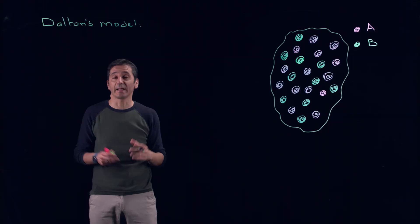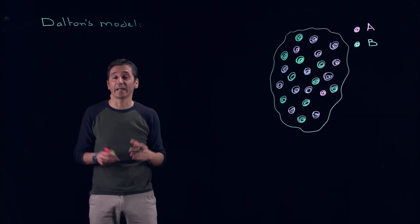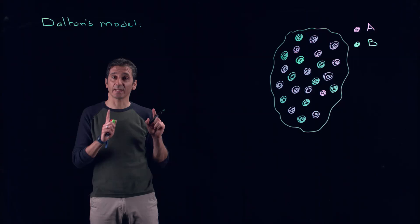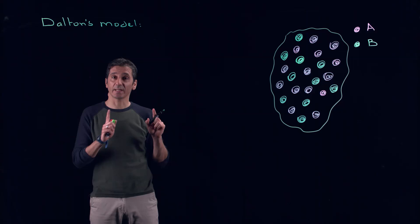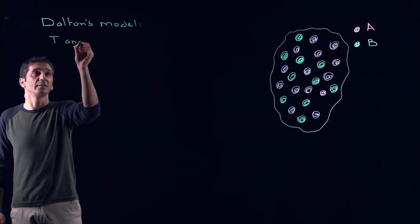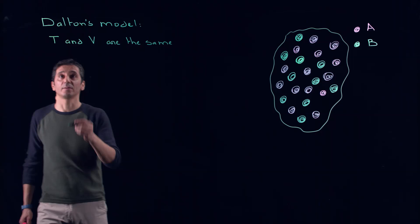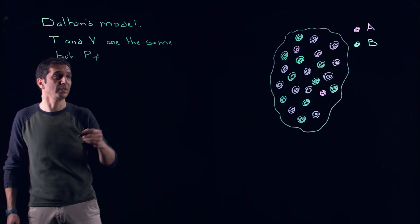The model that accounts for each component occupying all the volume is called Dalton's model, due to John Dalton, an English physicist and chemist. In Dalton's model, the volume occupied by A and B will be the same, the temperature must also be the same, but the difference is that the pressure will be different — P_A is different from P_B.